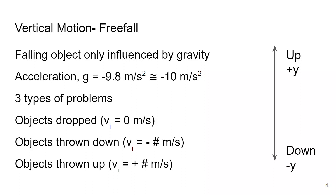Now there are three types of different free fall problems. We're going to go through the first one in this video and save the rest for later. The three types are: objects that are simply dropped, where they have an initial velocity of zero; objects that are thrown downward, so they have a negative initial velocity; and objects that are thrown upward, which will have a positive initial velocity.